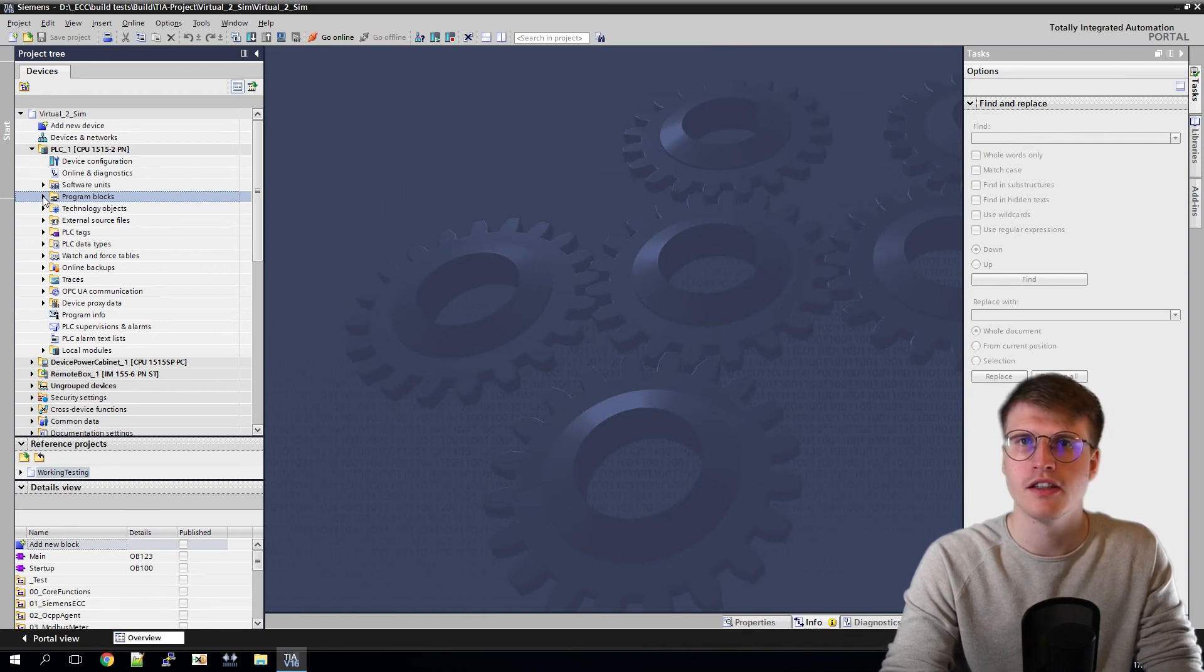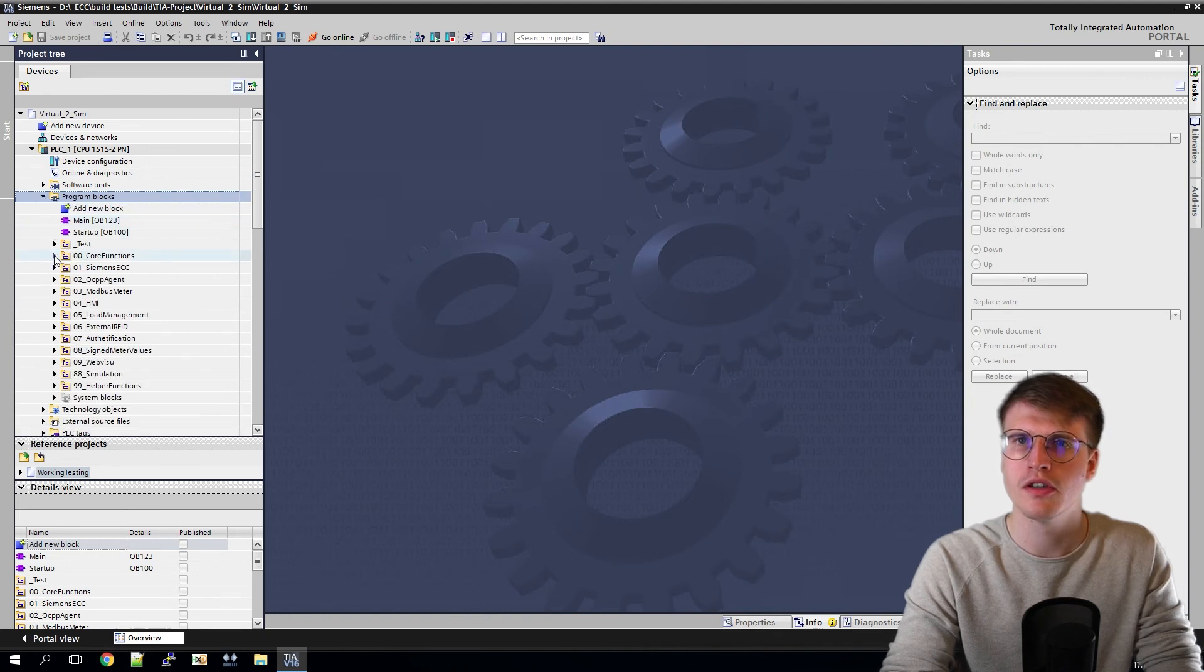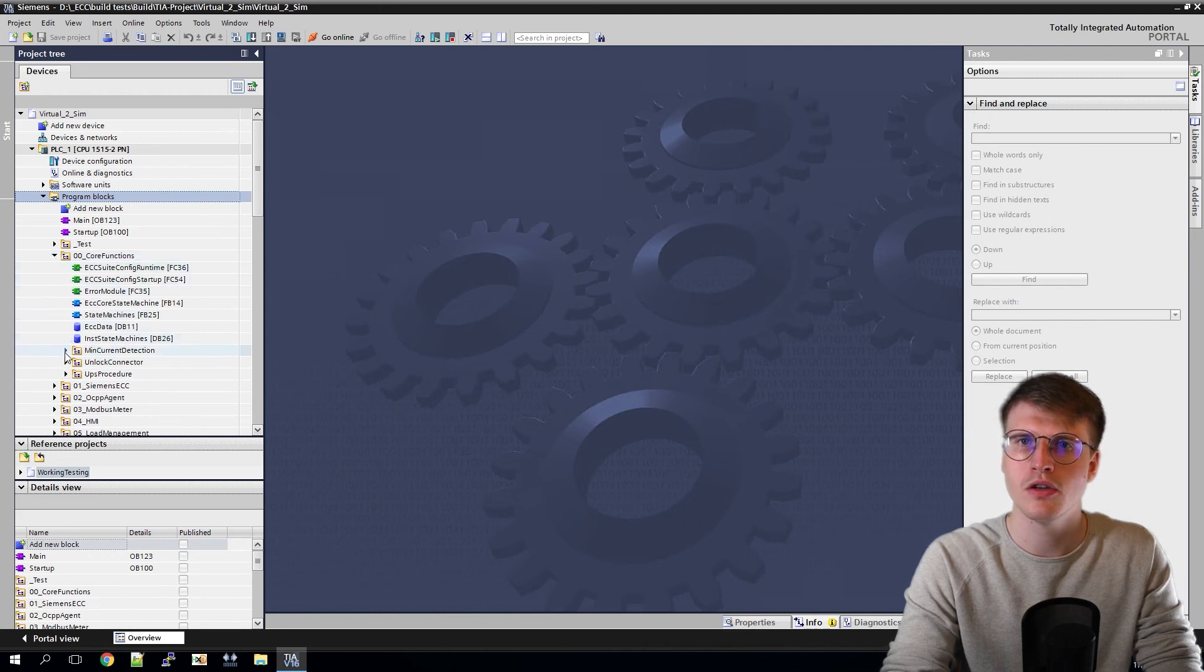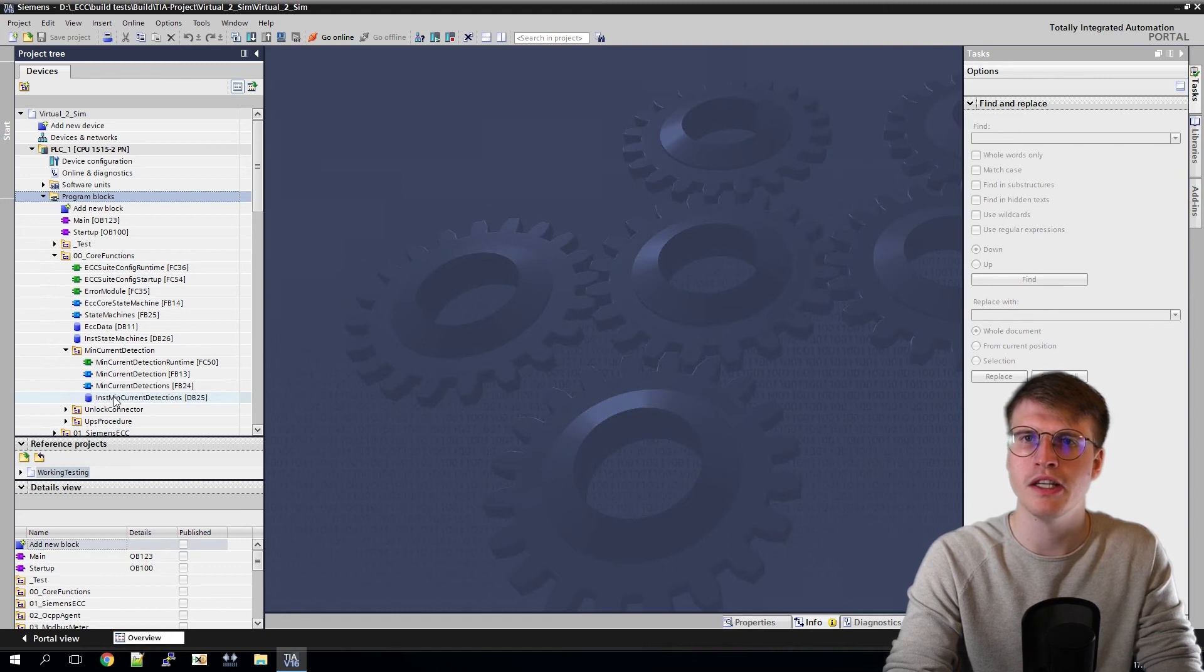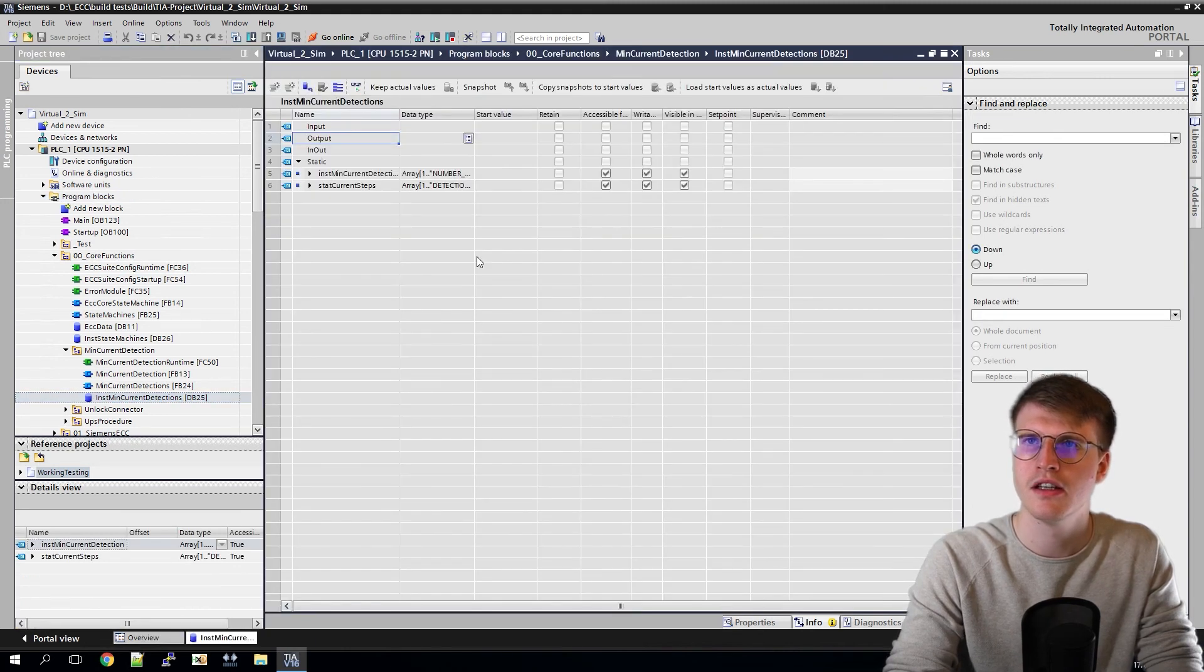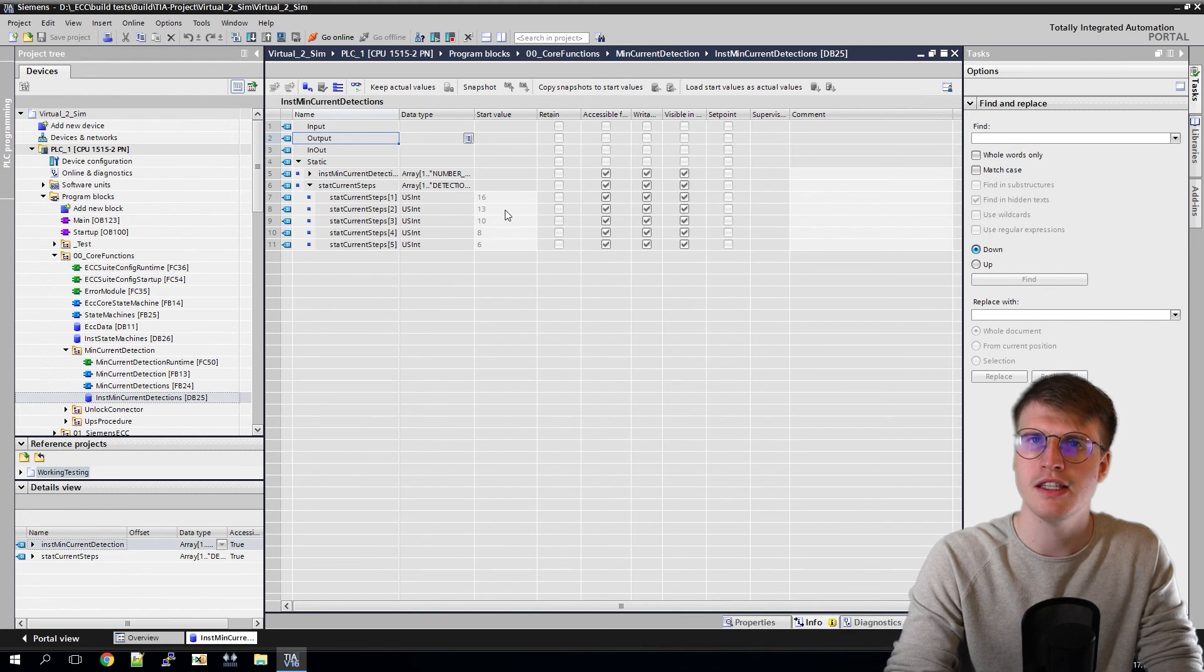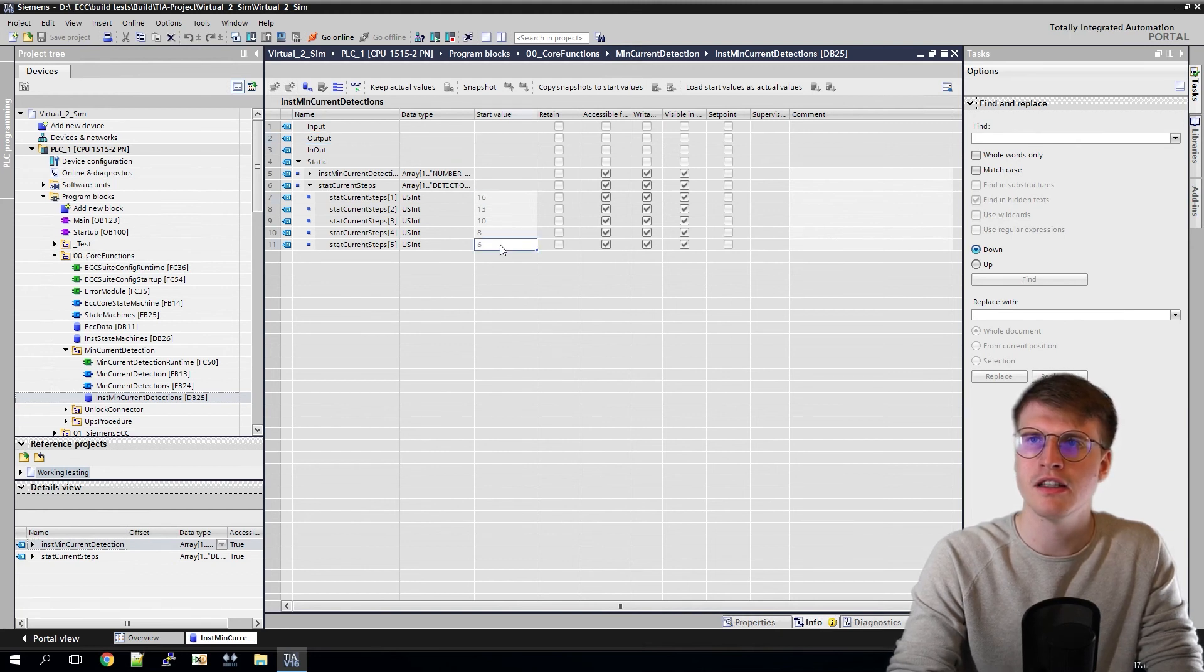I then open the program block. Here I go to the folder 00 core functions and open the min current detection folder. Then I go to the DB inst min current detections. All the variables for this block are now listed here and I open the stat current steps. Here I can see the steps that the min current detection runs through. If I want to change these steps, I just enter new values here. It is always important that the highest value is in the first place.